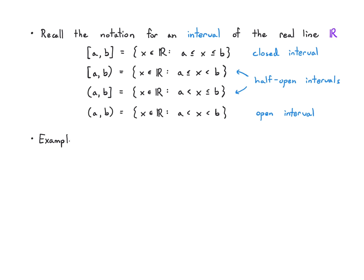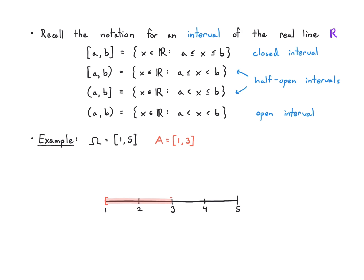Let's work out an example with interval notation and set operations. The universal set is [1, 5], drawn as a line. Set A is [1, 3] inclusive, written with square brackets. Set B is the open interval (2, 4), drawn with curvy parentheses stretching from 2 to 4. And C is the half open interval (3, 5], starting right after 3 and going to 5.